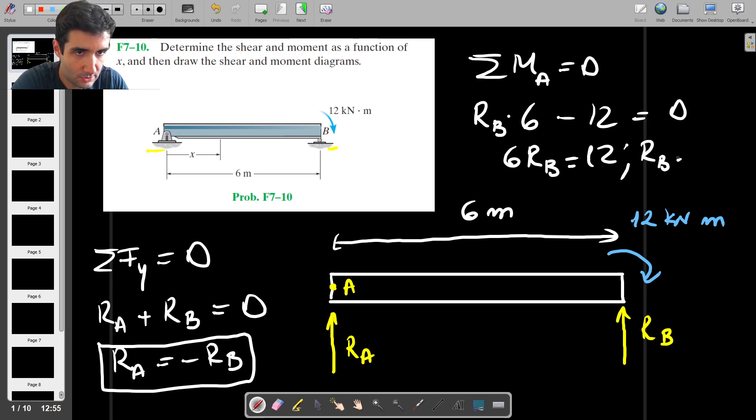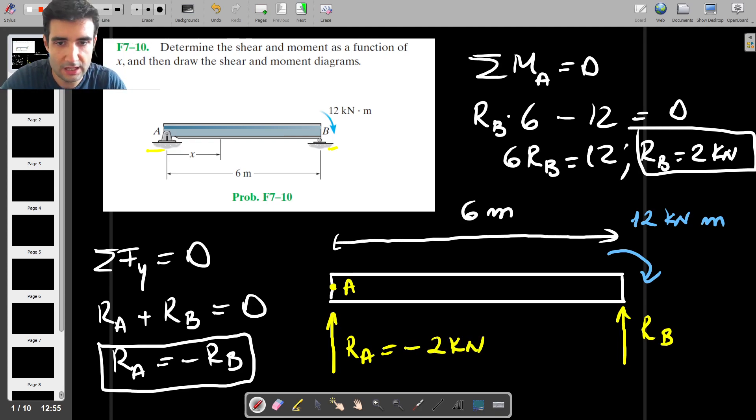RB is 2 kN, and it's positive, which means that the direction we assumed for RB was correct. So RB is acting upwards, which means that RA is minus RB. So this is going to be minus 2 kN. So the actual direction of RA is down.